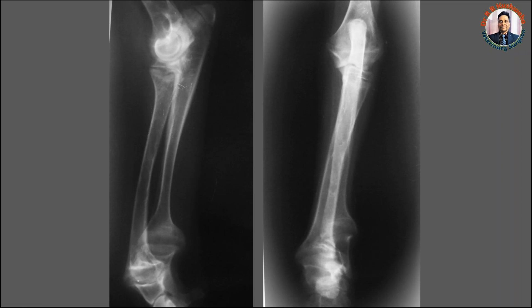By definition, rickets is a failure in mineralization of the osteoid tissue, that is the matrix. This matrix is seen here as a radiolucent line. We also call this the epiphyseal plate, physis, or growth plate.